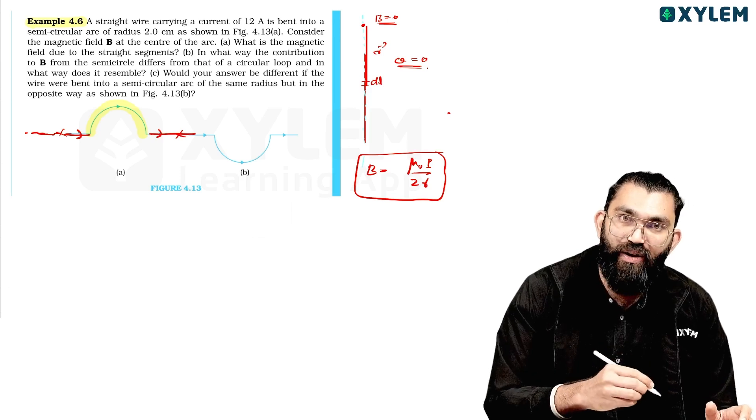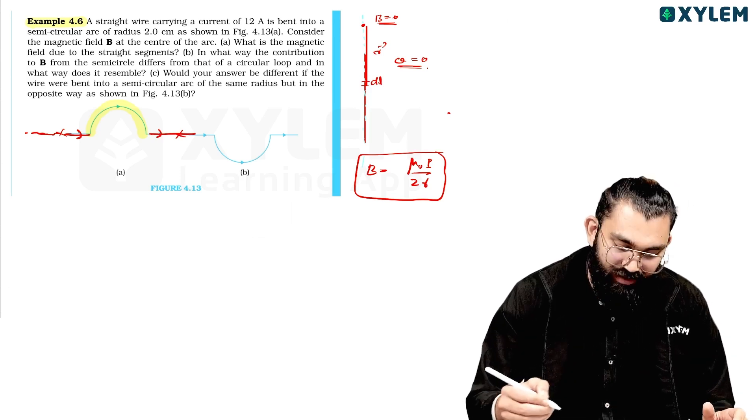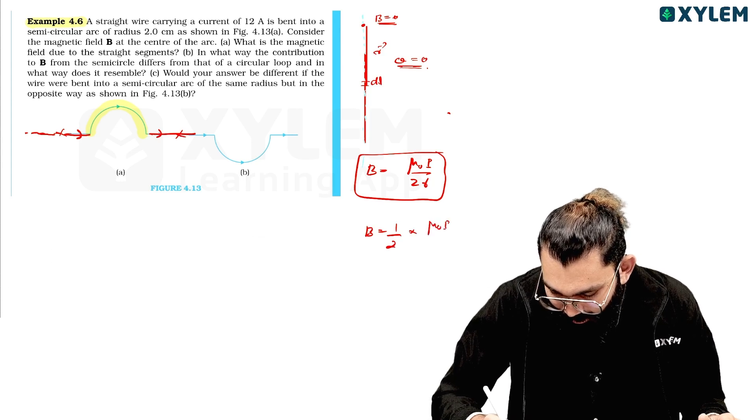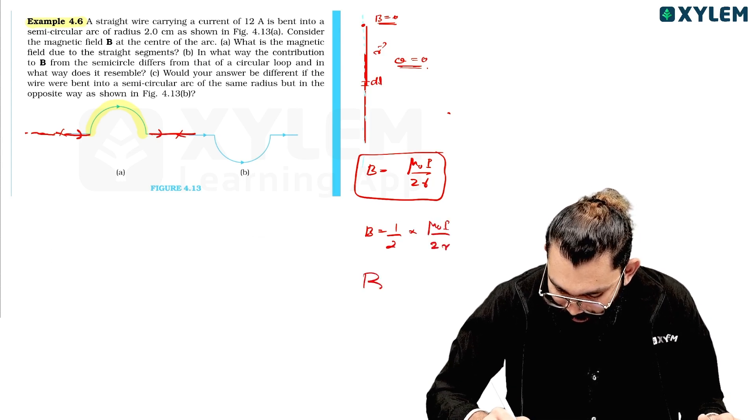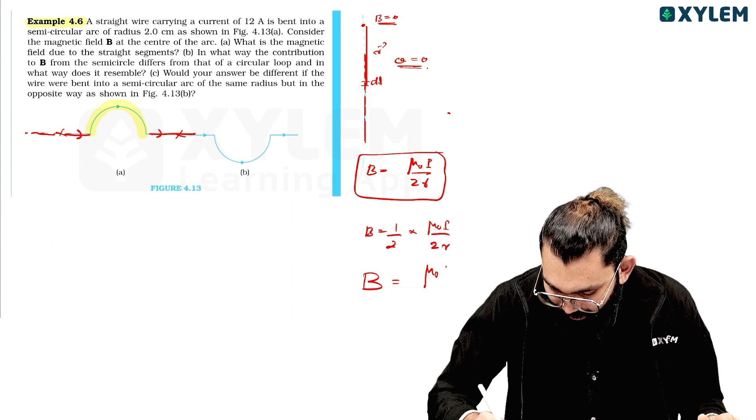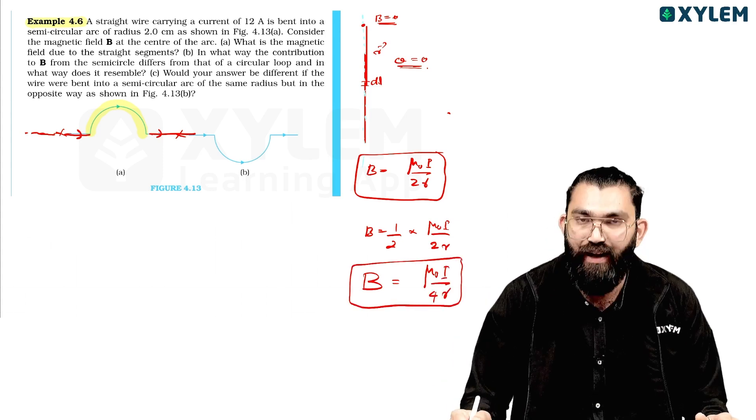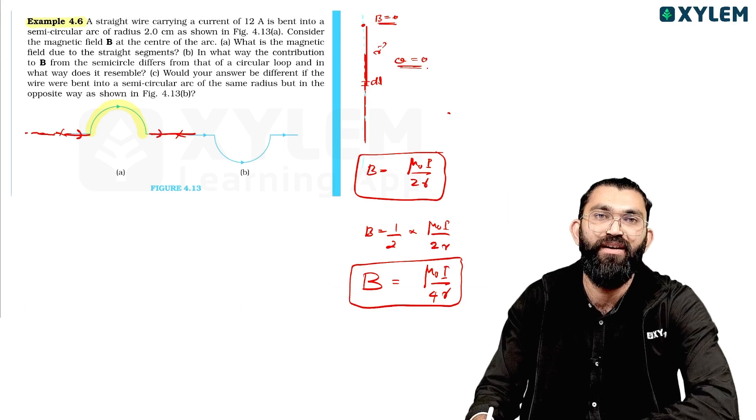Now, one full circle—if it is a full circle, half portion is semi-circle. Of course, the semi-circle magnetic field is one by two, half of mu_0 i by 2r. So the semi-circle contributes a magnetic field of mu_0 i by 4r. That's the concept.